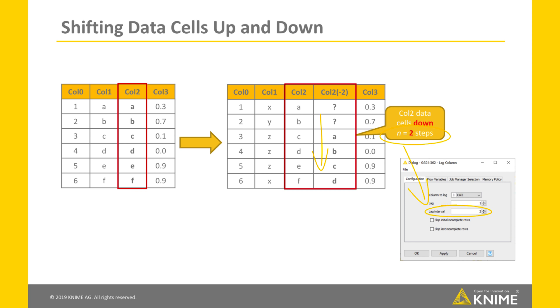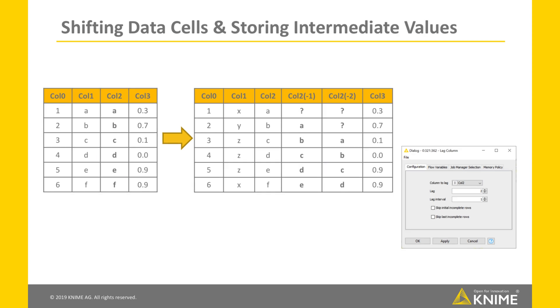This parameter N in the Lag Column node is called Lag Interval. The Lag Column node has another parameter named Lag, which acts in a similar way. If Lag is set to 2, the data cells in Column Col2 are again copied and shifted down two steps, like before.